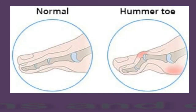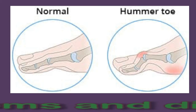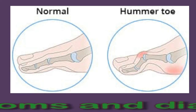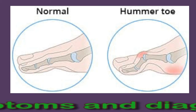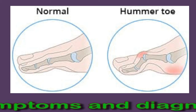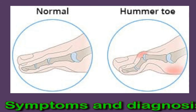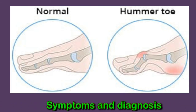Symptoms and diagnosis: the symptoms of hammer toe are often very visible. The affected toe will be bent, looking like a hammer. Other symptoms include pain in the affected toe, especially when moving it or wearing shoes, and corns and calluses on top of the middle joint of the hammer toe, as well as swelling, redness, or a burning sensation.